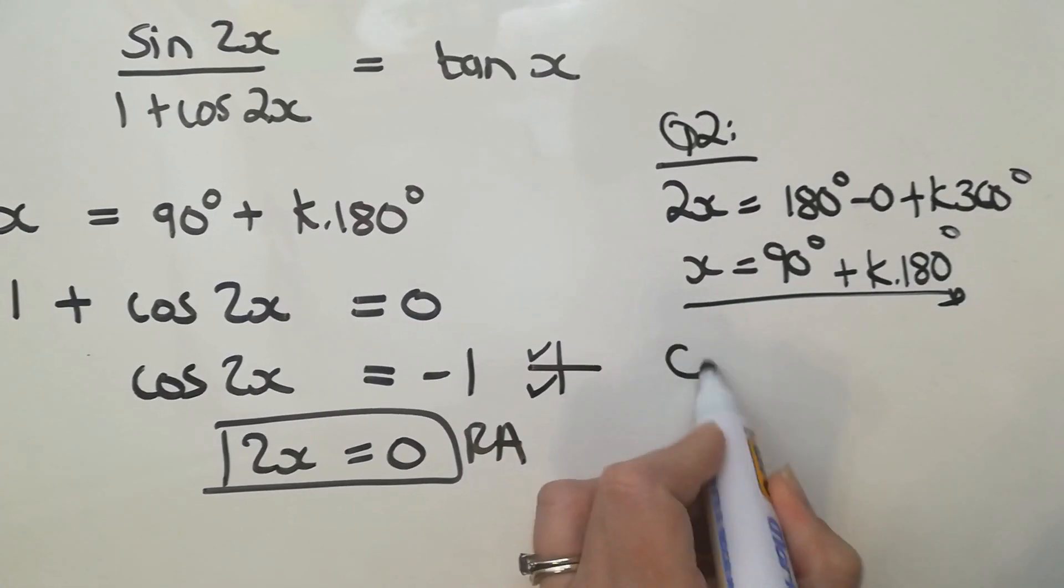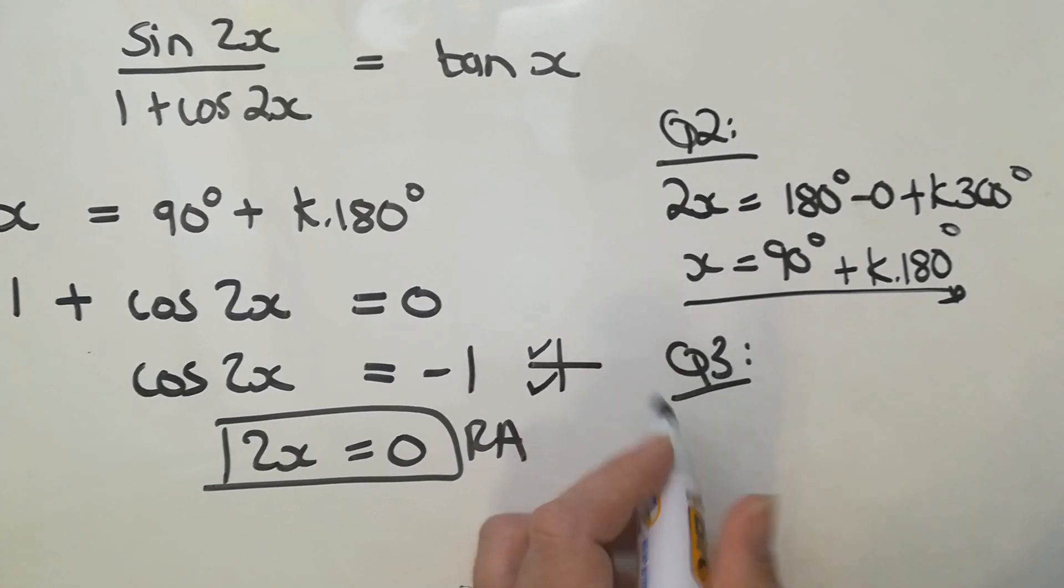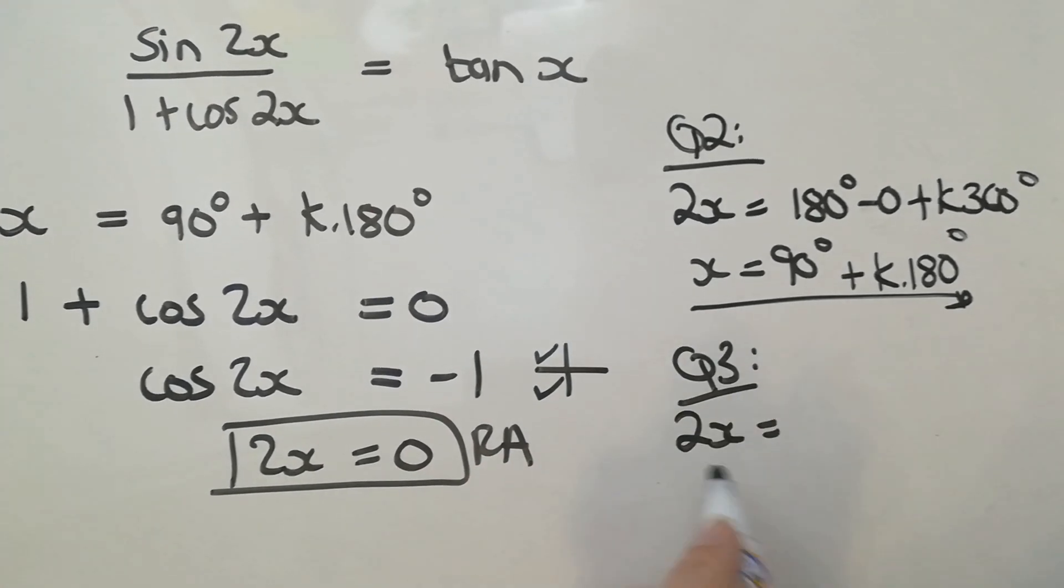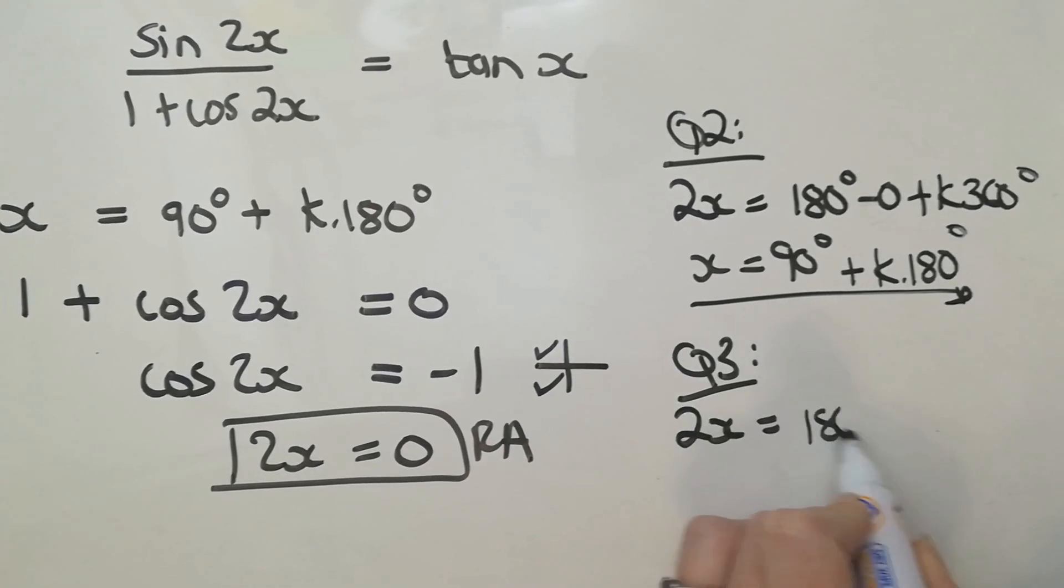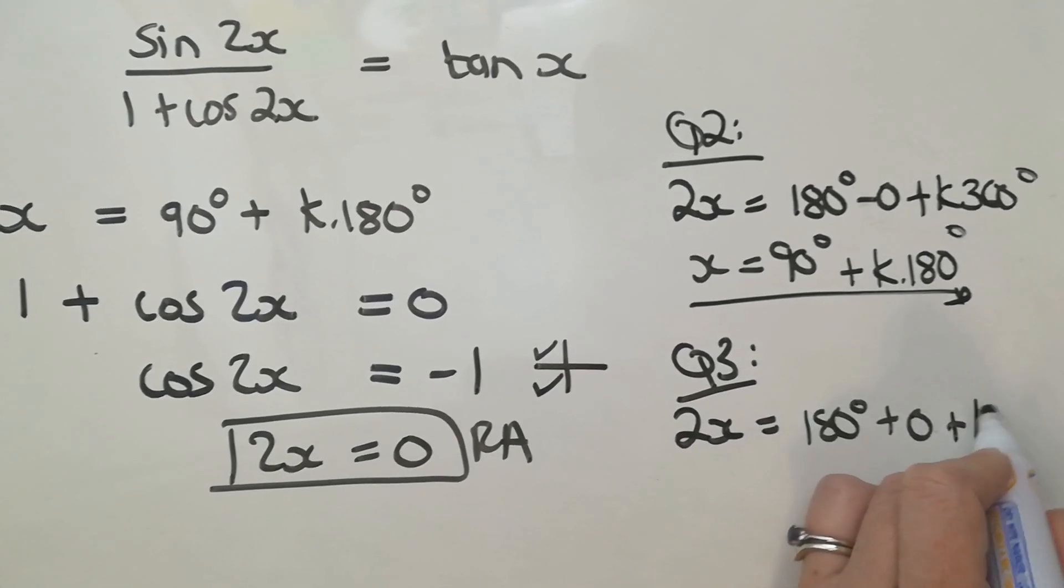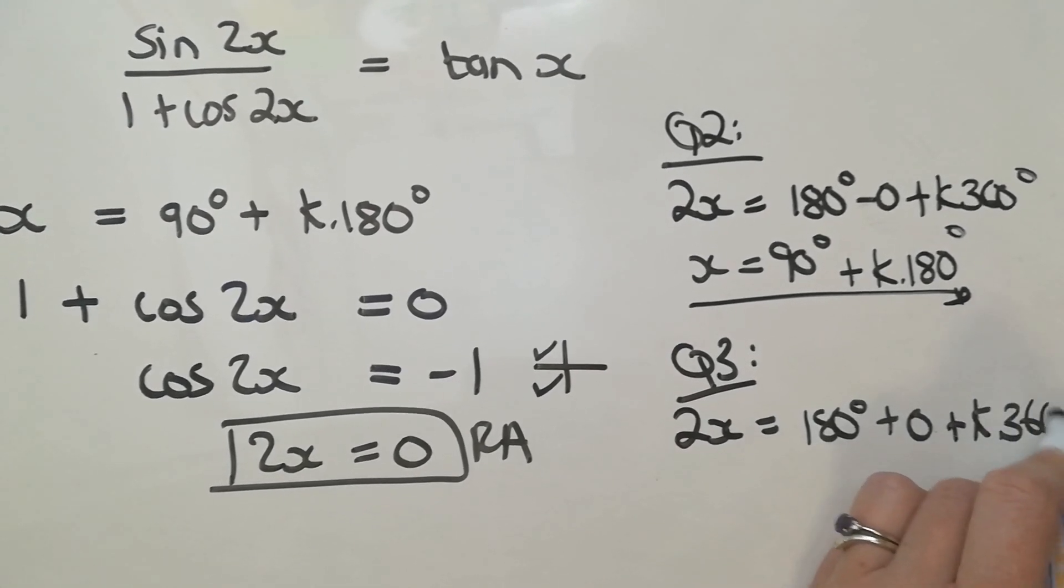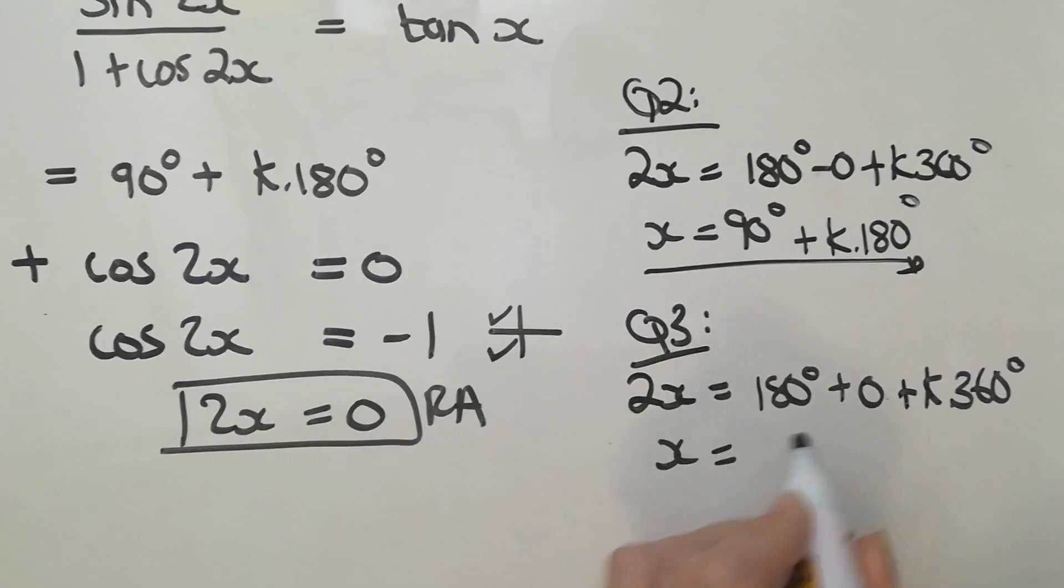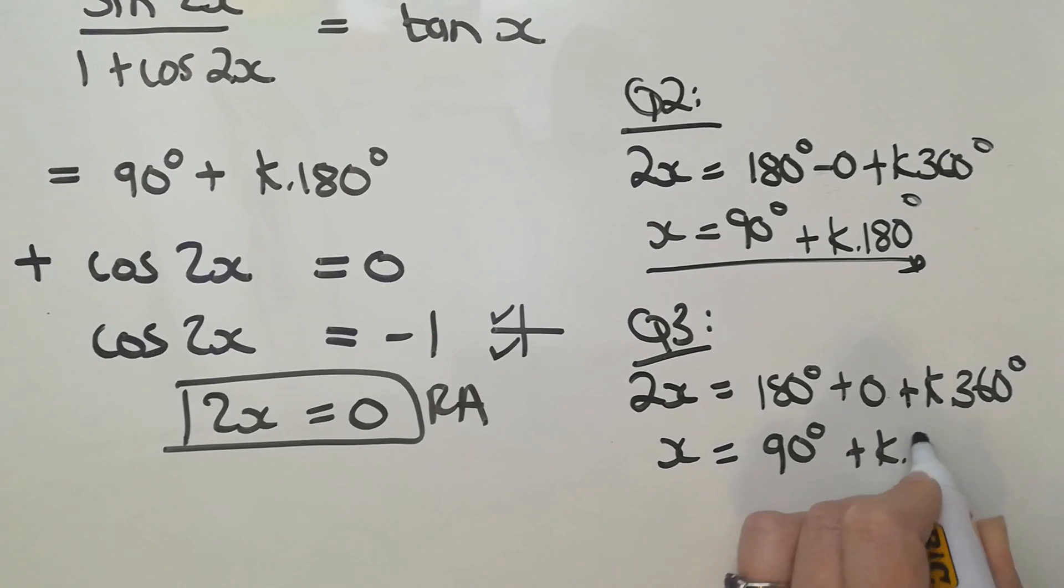So in quad 3, I'm going to have 180 plus. It's actually giving me the same answer. So I'm going to get 2x equals 180 degrees plus 0 plus k360. And then that's going to give me x is 90 plus k180.